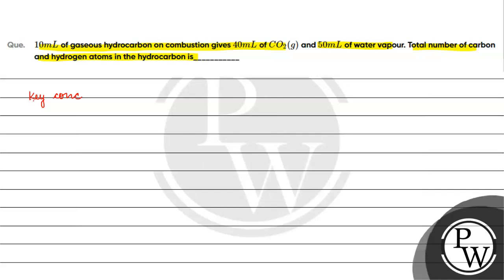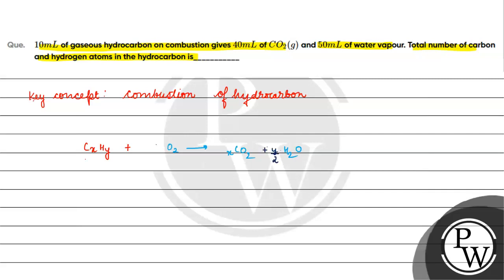Combustion of hydrocarbon: CxHy plus O2 gives us CO2 plus water vapor. This gives x moles of CO2 and y by 2 moles of H2O. So y moles of hydrogen will be used.